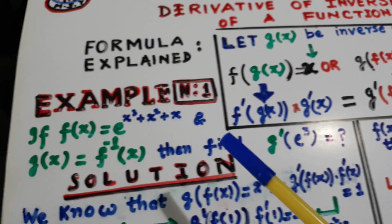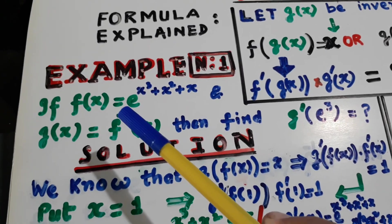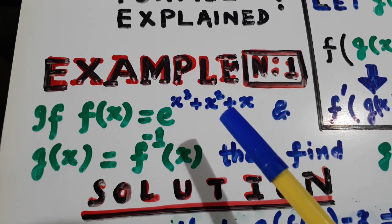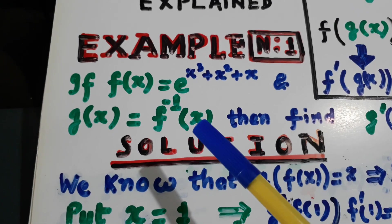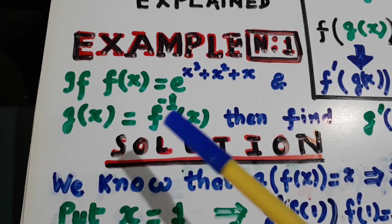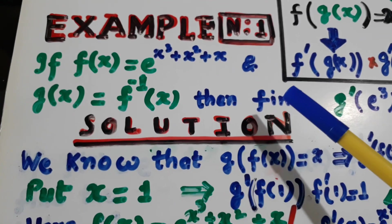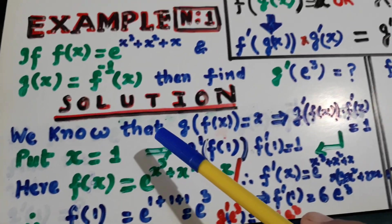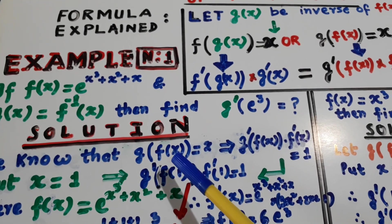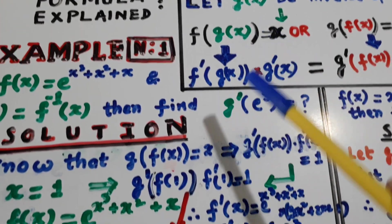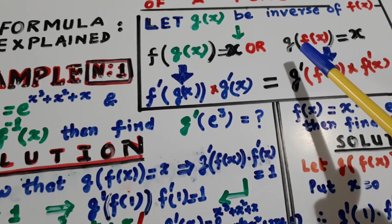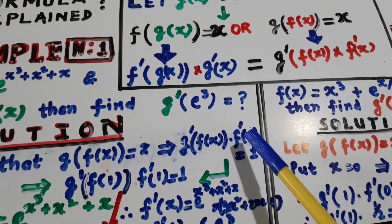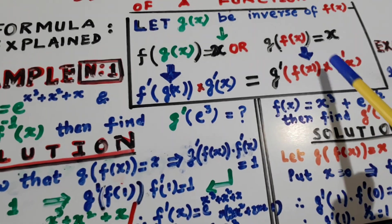Example number one. If f(x) is equal to e raised to the power x³ plus x² plus x, and g(x) is f inverse of x, then find g dash of e³. Now we know that g of f(x) is x, and g dash of f(x) into f dash x are equal — equal by this formula.